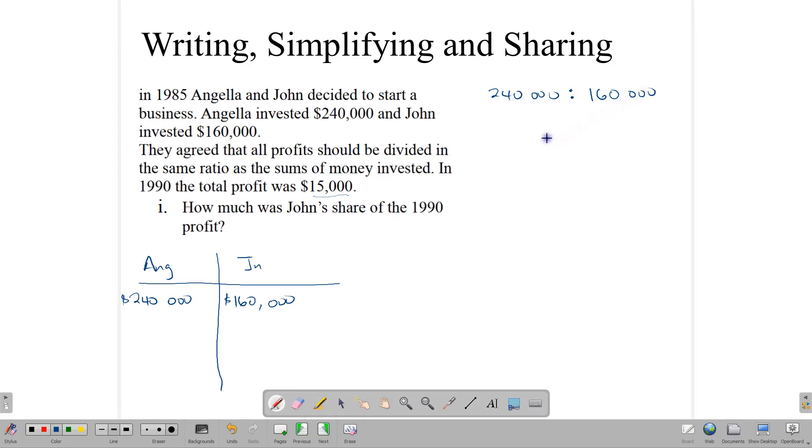How much money was invested? Angela invested $240,000, and John invested $160,000. Now this is the ratio. So let's write it: $240,000 to $160,000. But as we said, ratios must be written in their simplest form possible. We can do that by dividing by the highest number that we can divide these by. Let's start first by dividing by 10,000, which gives us 24 to 16. We can still divide by 8 again, and that gives us 3 to 2.